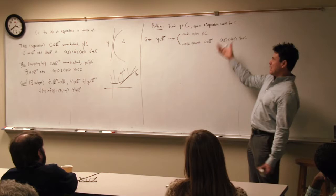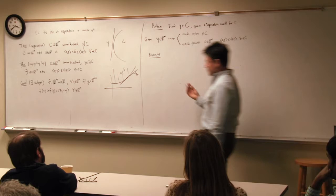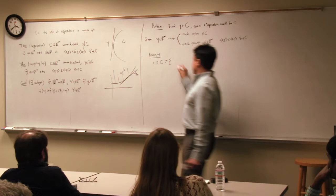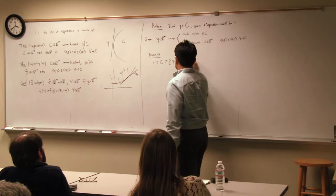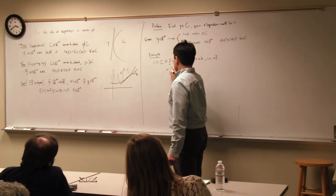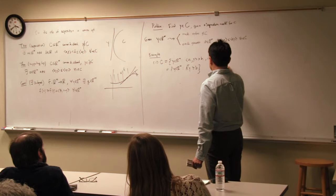That's the description we have of our set, and our mission is to find a point in it. The first example is the standard linear programming setting: the set C is a polyhedron defined by finitely many inequalities, written as A-transpose Y greater than or equal to B, where A is the matrix A_1 up to A_N.